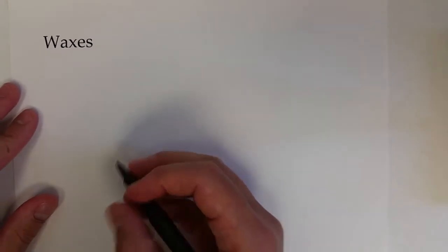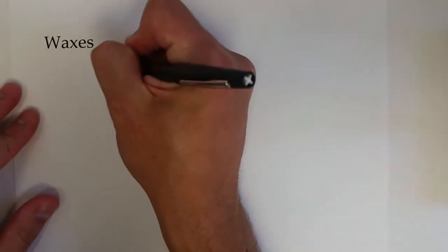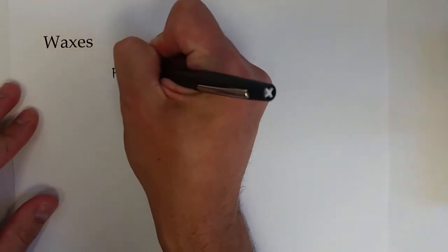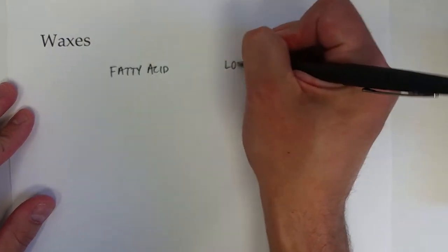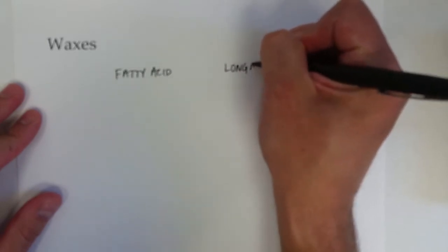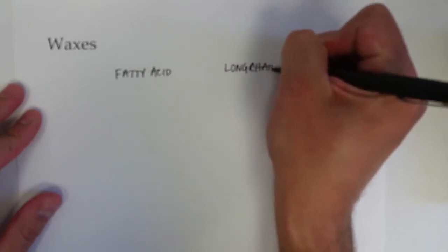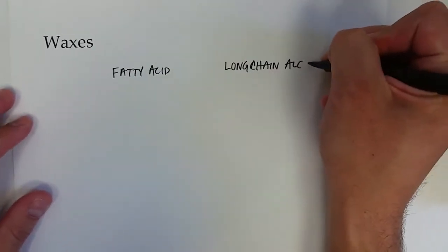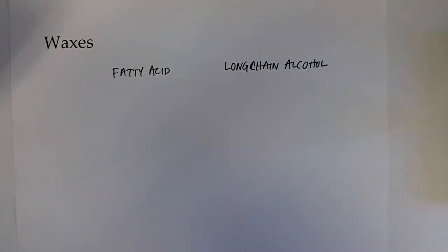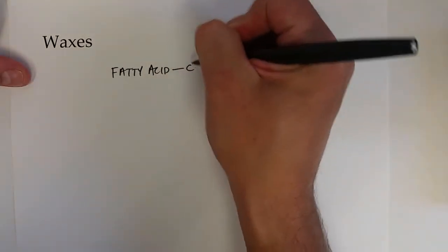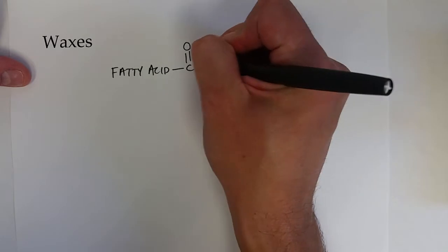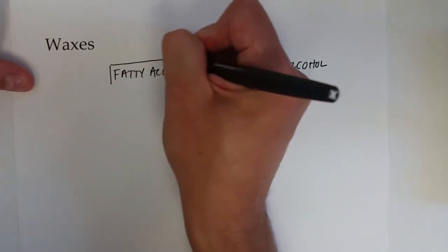Waxes are another type of lipid and the essential structure of a wax is that it is a long-chain fatty acid that is linked up with a long-chain alcohol, and they are linked up through an ester bond.